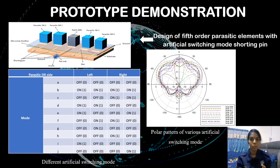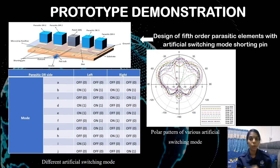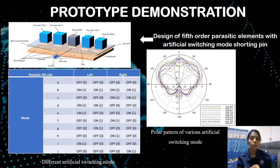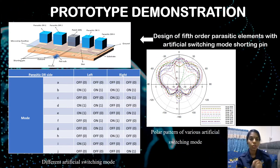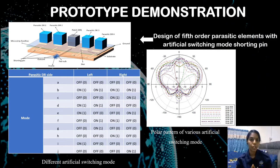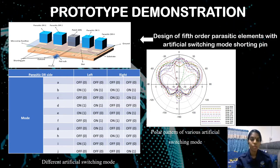The figure shows the switching mode with the polar pattern of each switching mode. From here we can conclude that there is some angular variation for each switching mode.